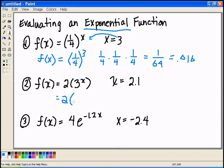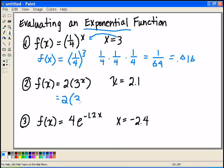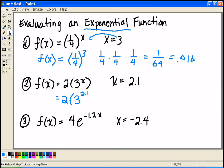Because there's this parentheses here, we're not going to raise 2 to the power. The only thing we're going to raise to the power is the part immediately next to the x, which in this case is the 3. So we get 2 times 3 raised to the 2.1 power.